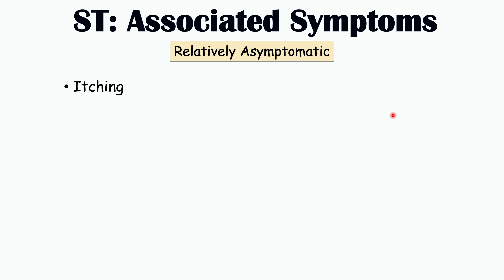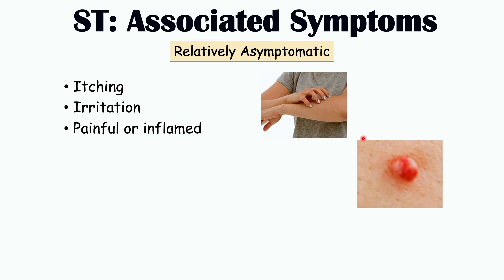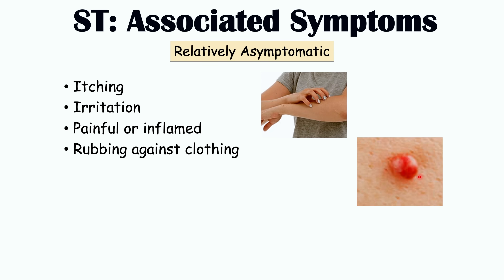There may be some associated symptoms from skin tags in some individuals, although they are most often relatively asymptomatic. Potential symptoms include itching, especially if the skin tag is in an area that is becoming irritated. Irritation of the skin tag itself may also occur, leading to pain or inflammation. The skin tag can become painful, reddened, or inflamed, and can be a nuisance if it's rubbing against clothing or jewelry.